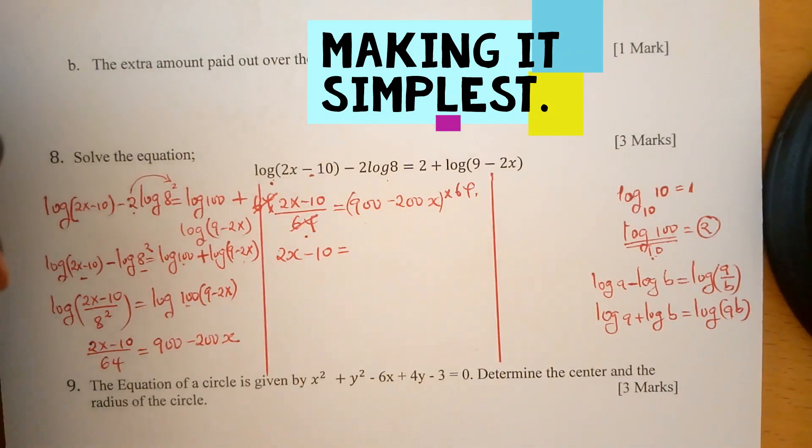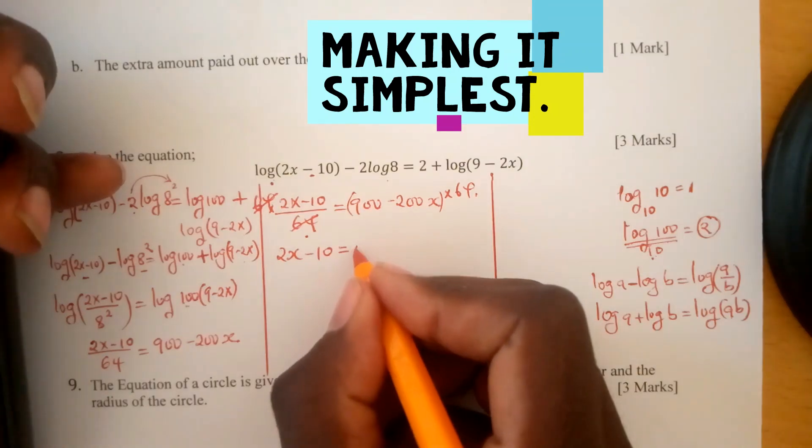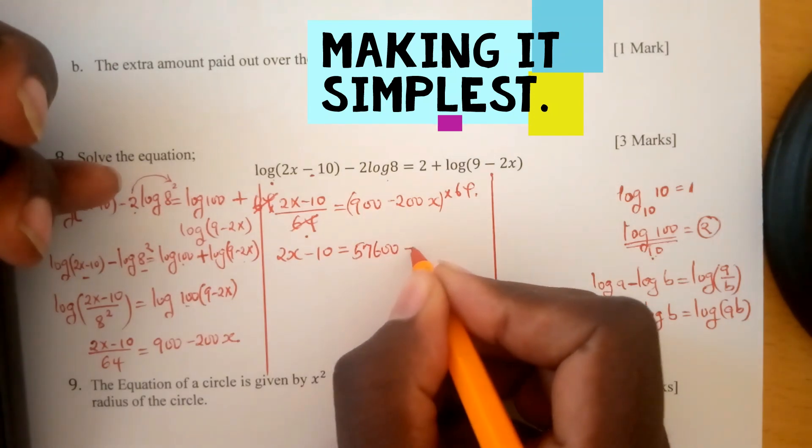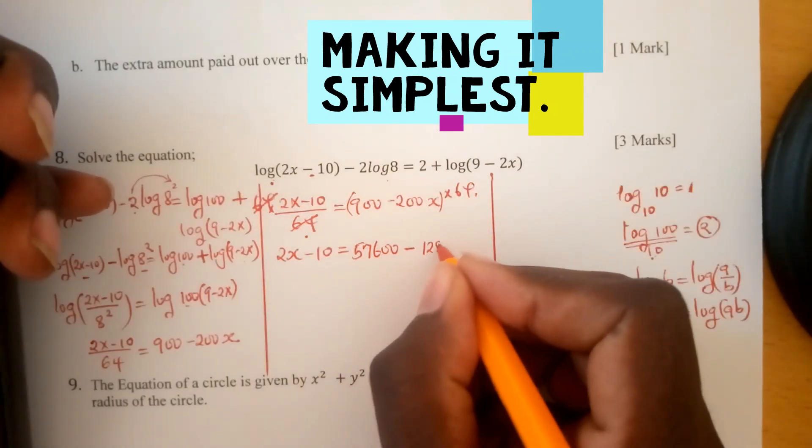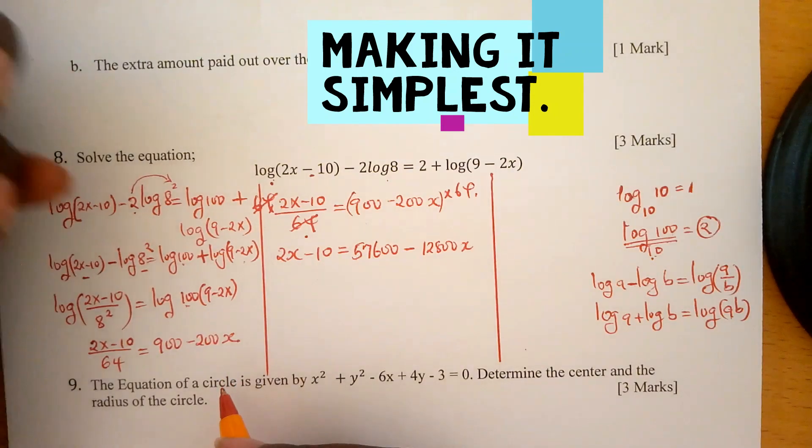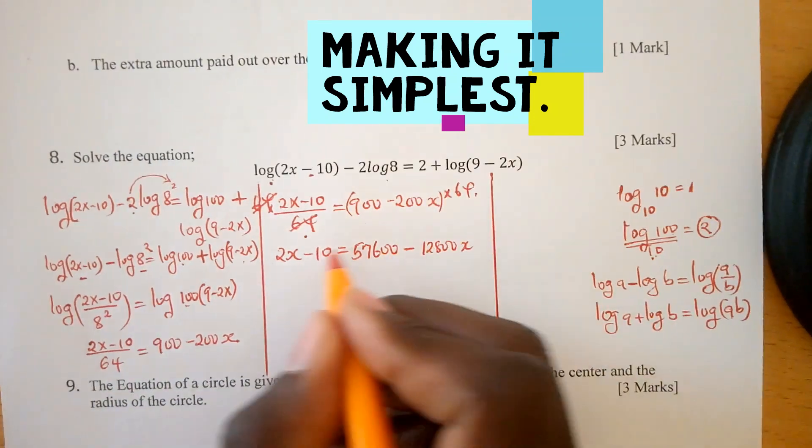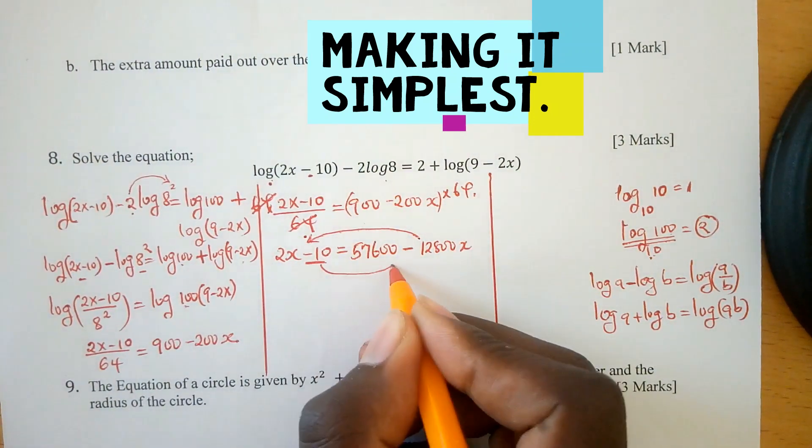Then collect the like terms, putting the ones with x to one side. We have 2x + 12,800x = 57,600 + 10.